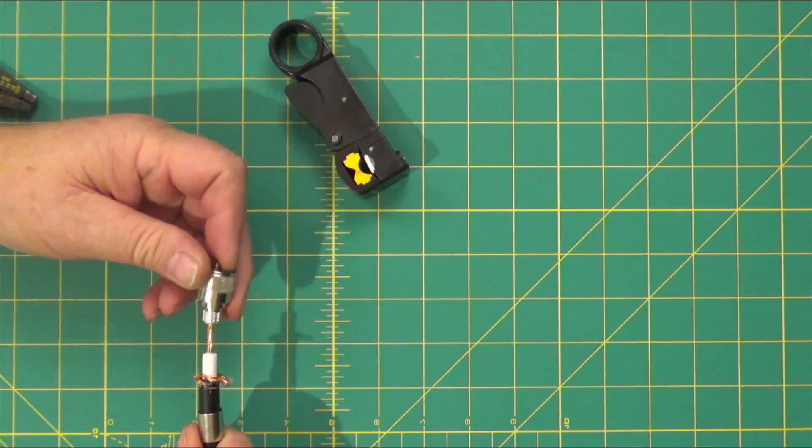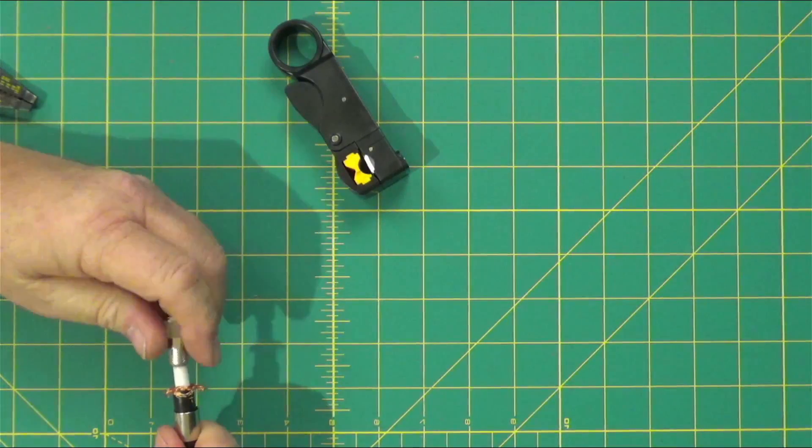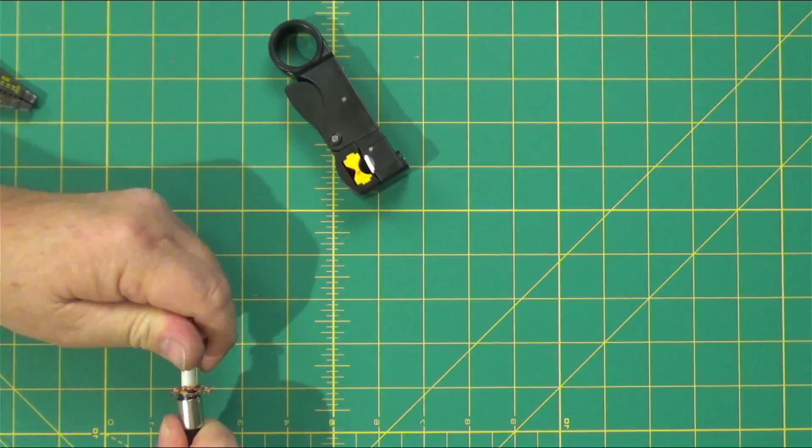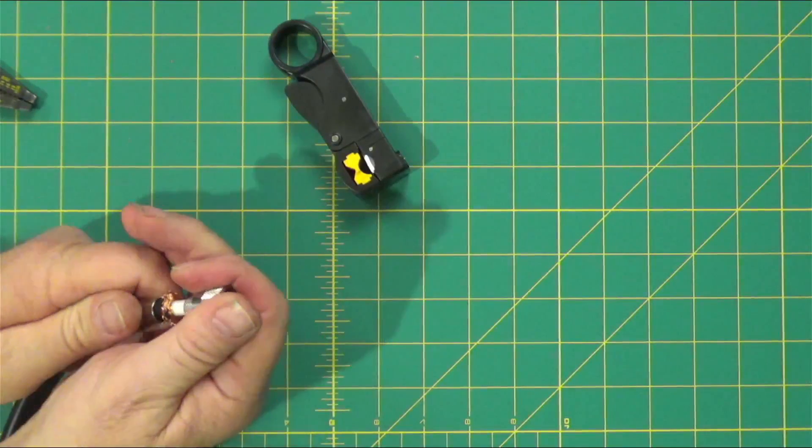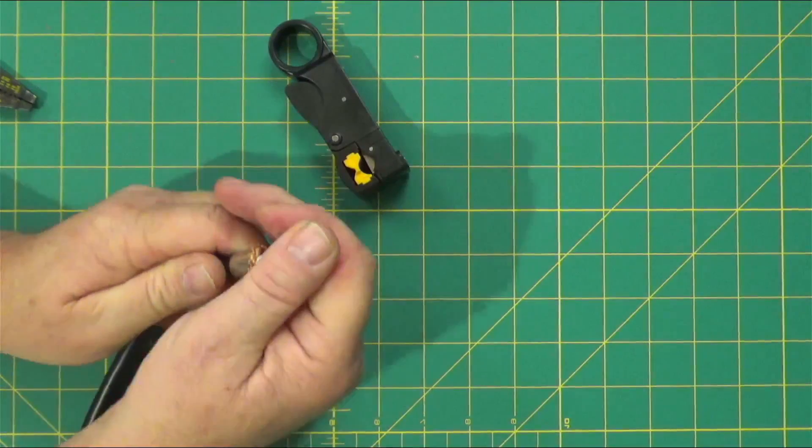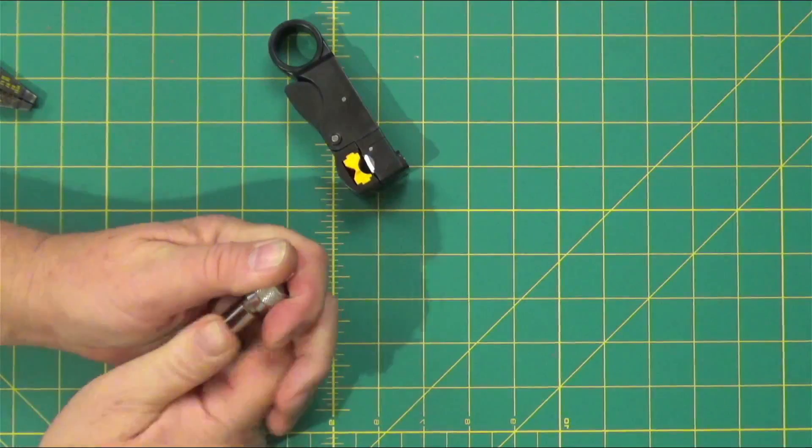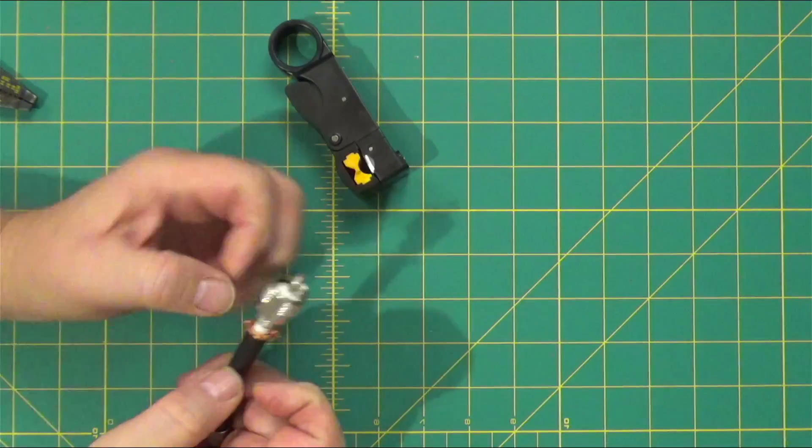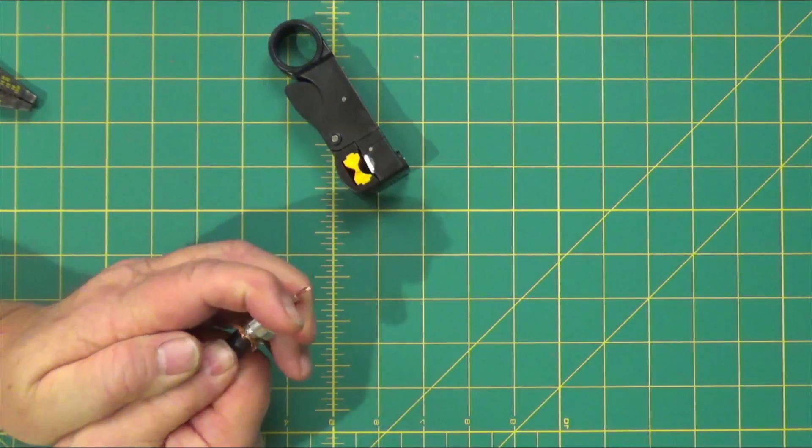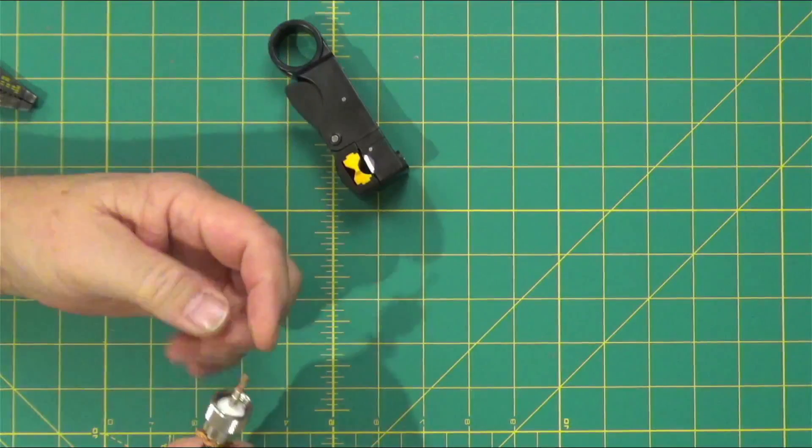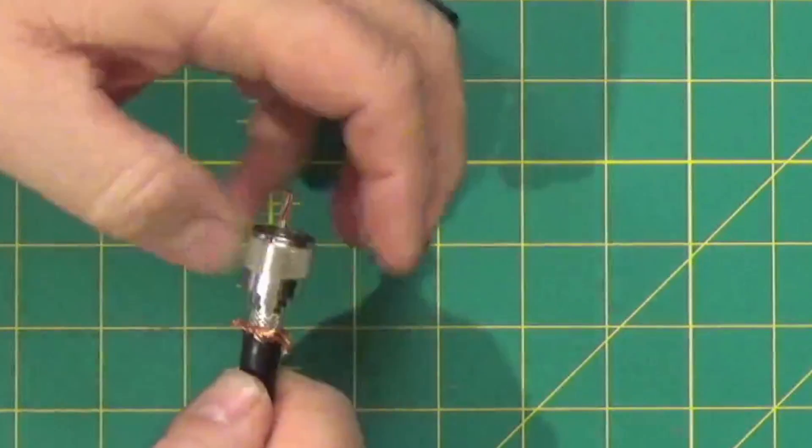Now your fitting goes on. It's a pretty tight fit here. Sometimes you've got to actually twist this to get it on. I've got that plenty along. If you can see there, the center conductor sticks out quite a ways. That's fine, we'll cut that later.